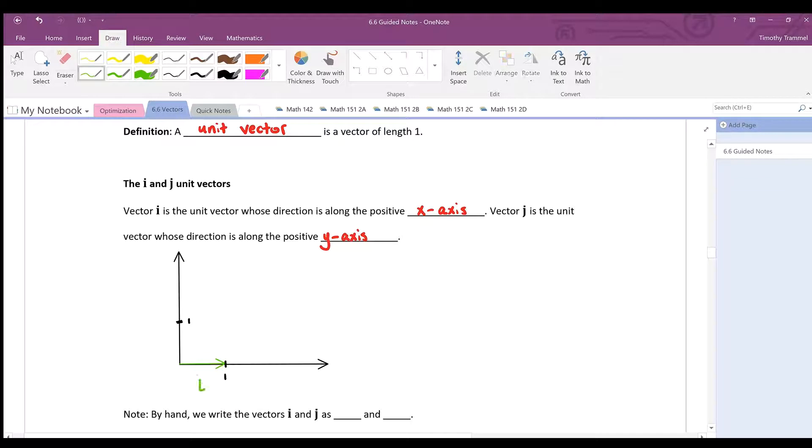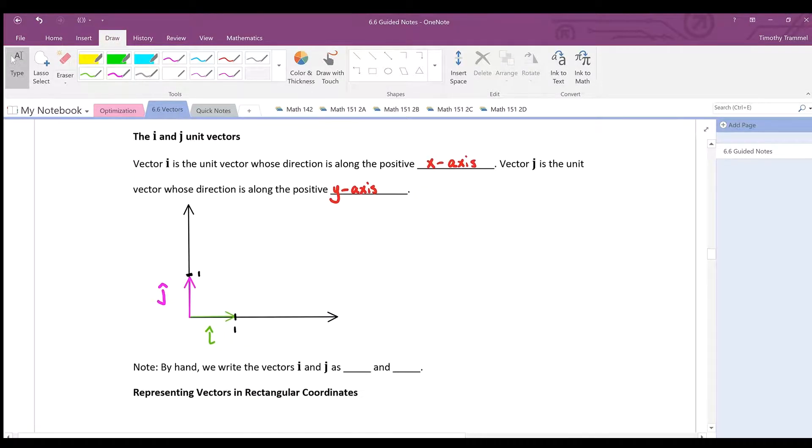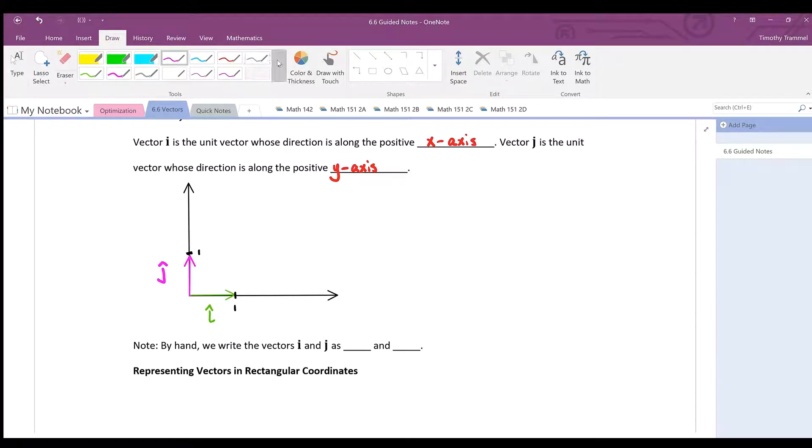Then the vector i, the one along the positive x-axis, looks like this. That there is our vector i. In boldface it's a vector, but by hand we write i hat. The vector j runs along the positive y-axis and is notated j hat. That's what we write by hand: i hat and j hat.